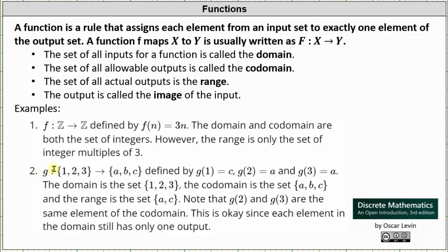Next, we have the function g that maps the set containing elements one, two, and three to the set containing elements a, b, and c, defined by g of one equals c, g of two equals a, and g of three equals a. Notice how the order of the elements in the domain and codomain do not indicate related inputs and outputs — we actually have to define the inputs and outputs as shown here.